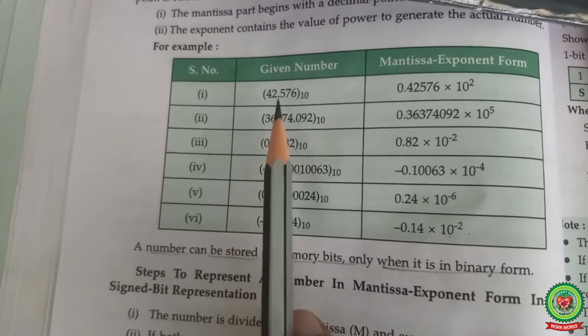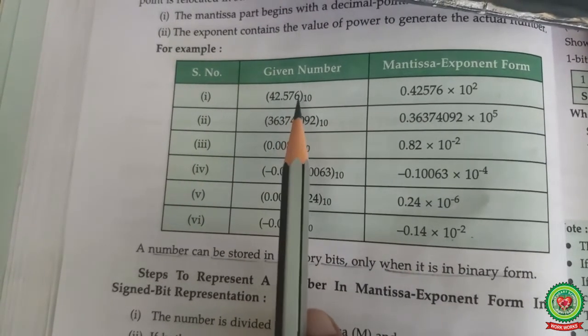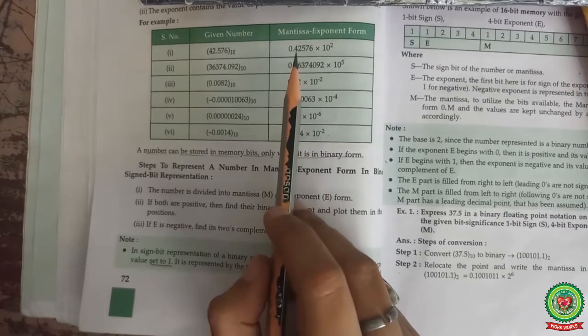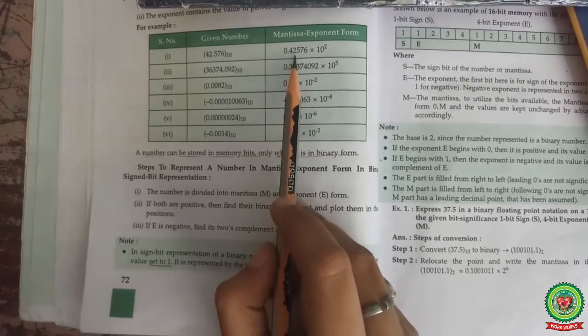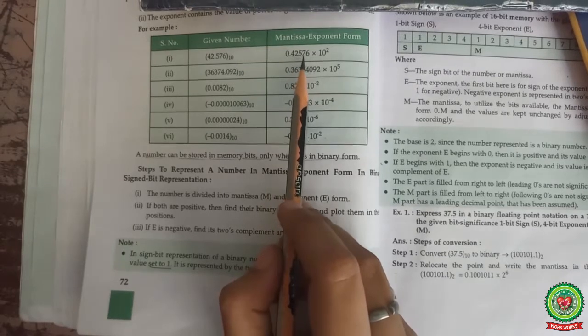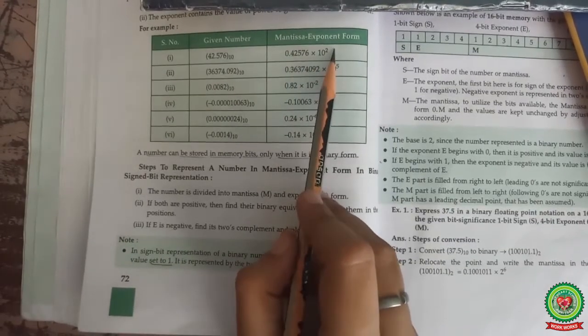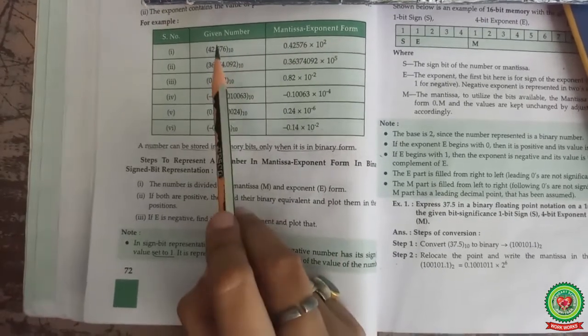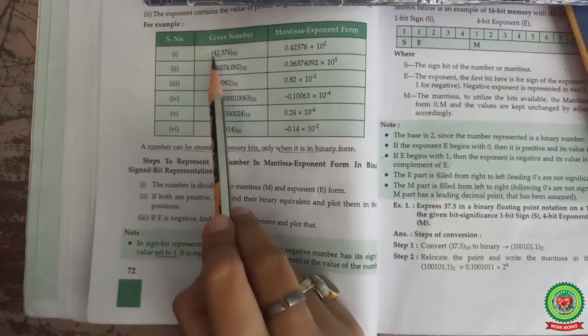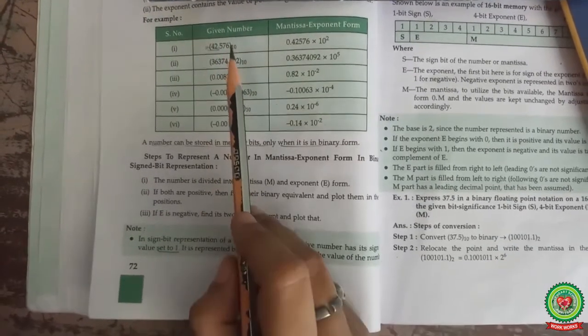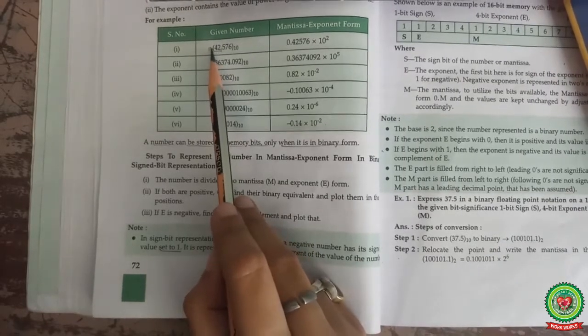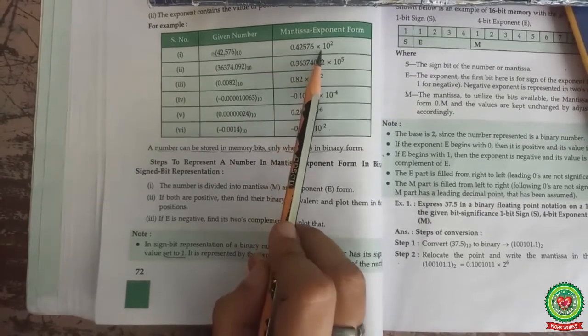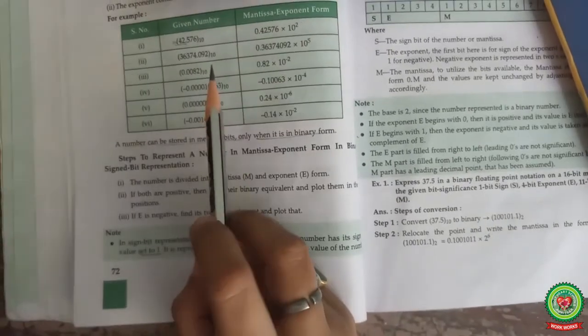First example: 42.576 base 10. In mantissa exponent form, it should be 0.42576 times 10 raised to power 2. By 10 raised to power 2, we can see that we have shifted this decimal point towards the left, and it is shifted 2 digits to the left. So my answer is 0.42576 times 10 raised to power 2.